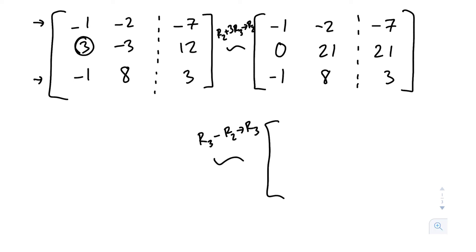So we want to multiply negative 1 by R2. That's going to be 1. Negative 2 times negative 1 is 2, and then we're going to get 7. Then we're going to want to add that to row 3. So negative 1 plus 1 is 0, 2 plus 8 is 10, 7 plus 3 is 10. Now we have 0, 21, 21, negative 1, negative 2, and negative 7.